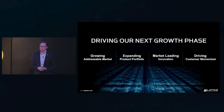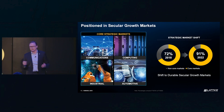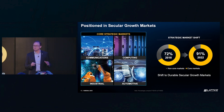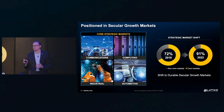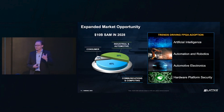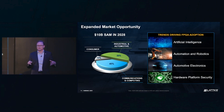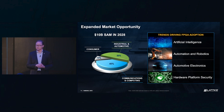Our four core markets — communications, computing, industrial, and automotive — are absolutely the right markets for Lattice to be in through the end of this decade and beyond. In these markets, there are underlying secular growth trends driving semiconductor consumption, particularly for the types of products and solutions Lattice brings. Over the past years, we've totally repositioned the company into these four core markets — now over 90% of our revenue comes from them. When we project out to 2028, we believe our total addressable market is about $10 billion, with about half from industrial and automotive and about 40% from comms and compute.